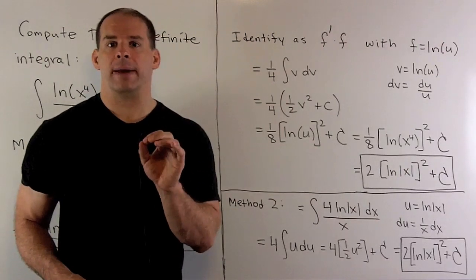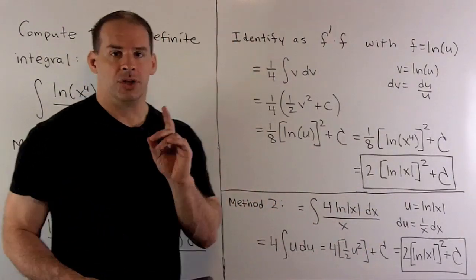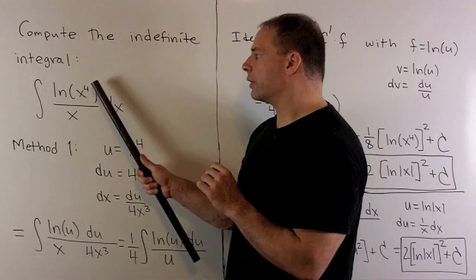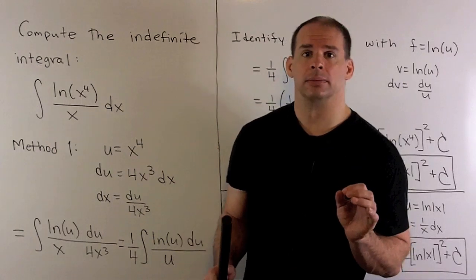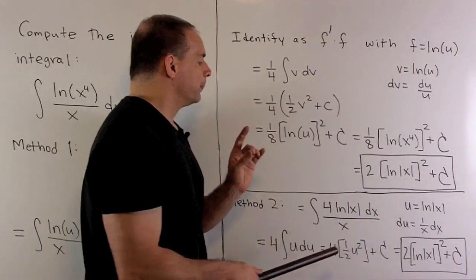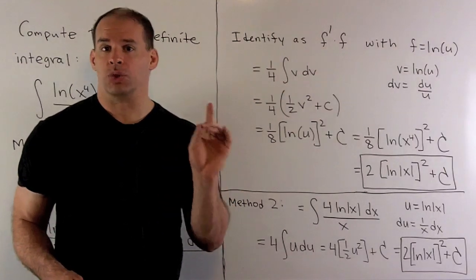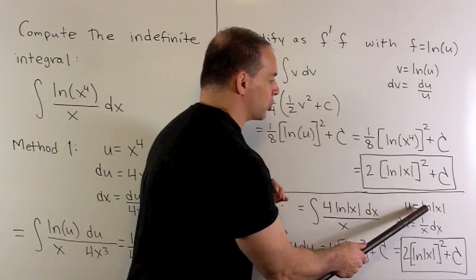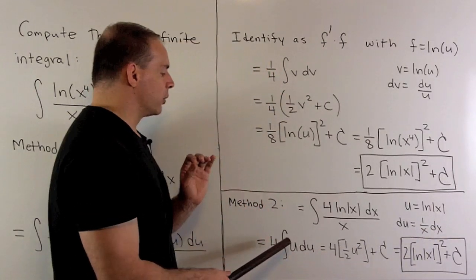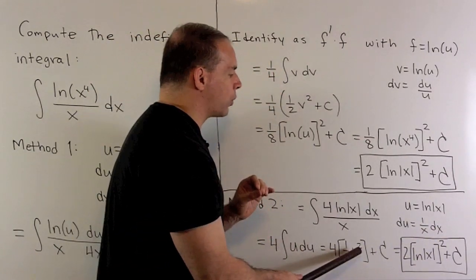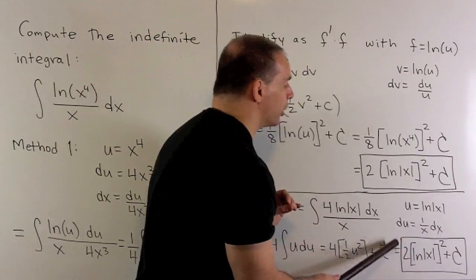Now let's try it a different way. We'll come up against the absolute value of x right off the bat. For this x to the fourth, we're going to just bring the 4 down in front as long as I'm willing to keep absolute value of x on the inside. So, still have a u substitution. The derivative of natural log of absolute value of x is 1 over x. So we'll let u be equal to natural log of absolute value of x, and then we follow our noses. We go from u to one half u squared, and when we put natural log of absolute value of x back in for u, we get the same answer as before.